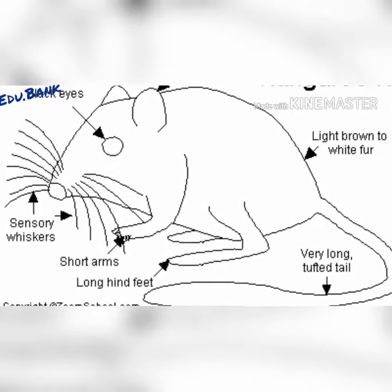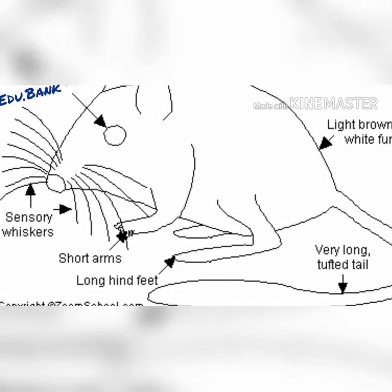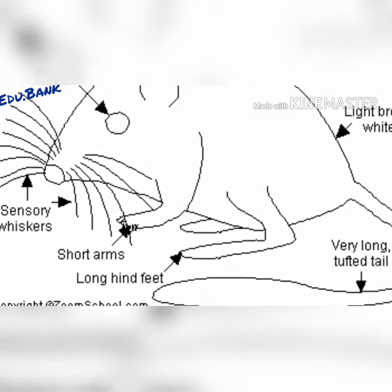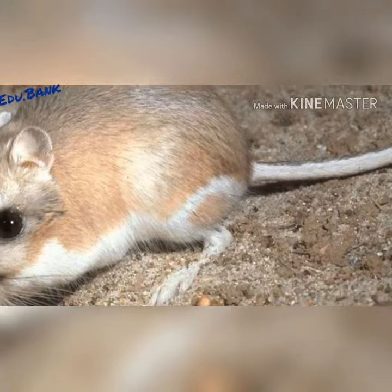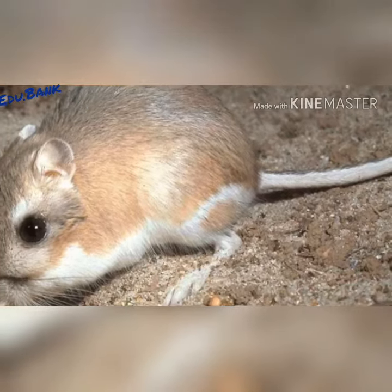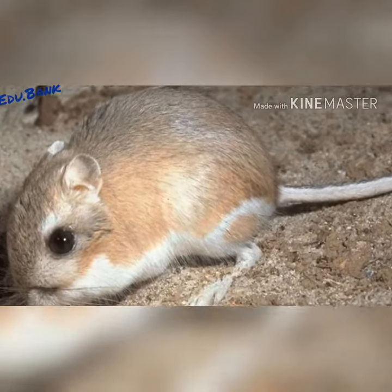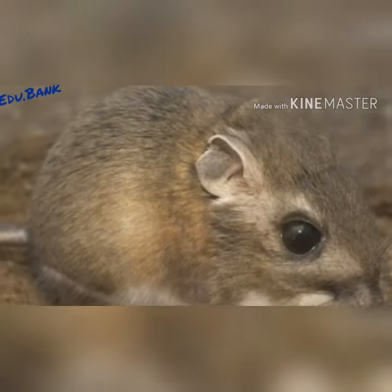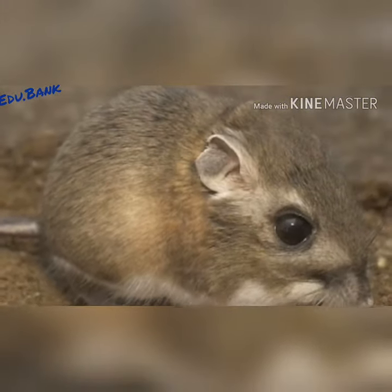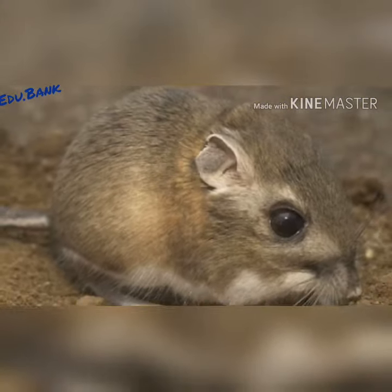The kangaroo rat is a small rodent native to North America, who is part of the genus Dipodomys. What makes this desert animal species unique is hinted at in the name — when they hop on their back feet, they look very similar to a kangaroo.